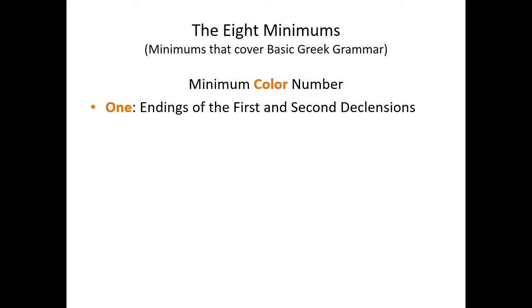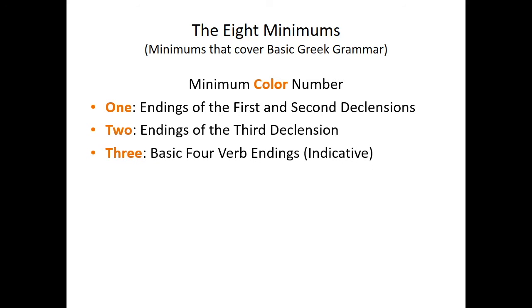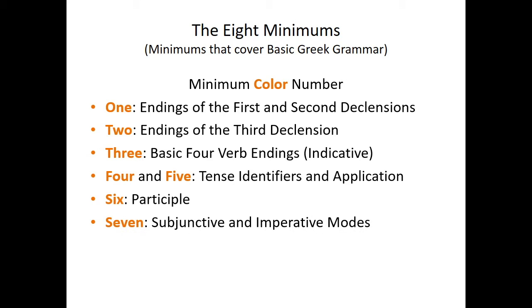Here they are by name. Minimum one are the endings of the first and second declensions. Minimum two are the endings of the third declension. Minimum three covers the four basic verb endings in the indicative mode. The fourth minimum along with five are the tense identifiers and the application of those tense identifiers to the four basic verb endings of the previous minimum. Then minimum six deals with the participle and minimum seven deals with the subjunctive and imperative modes. Minimum number eight is given on a separate slide on the mi verb.